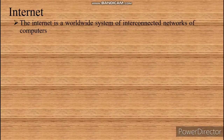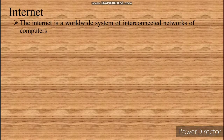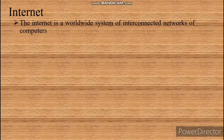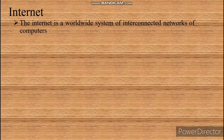The full form of internet is International Network. The internet is a worldwide system of interconnected networks of computers. It is a network of interconnected computer networks spread across the world. It is also called a network of networks. All the computers connected to the internet can communicate and share information.